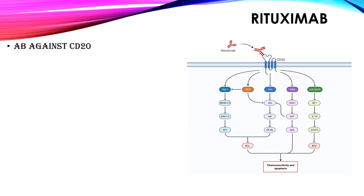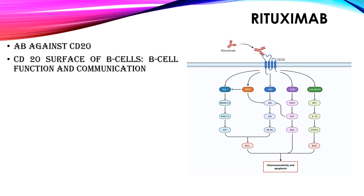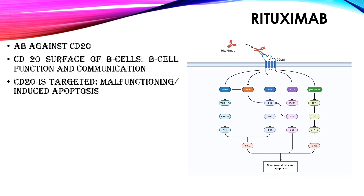The first drug in the R-CHOP regimen is rituximab. Rituximab is an antibody against CD20. CD20 is a protein that is expressed at the surface of B cells. CD20 is required for B cell function and communication with other cells. When CD20 is targeted, B cells — specifically malignant cells that express a high amount of CD20 — will start malfunctioning and will be removed from our body by a process called apoptosis, or programmed cell death. This process is a chain of biochemical events and pathways that results in removal of unwanted cells.